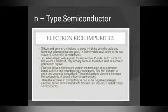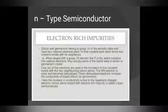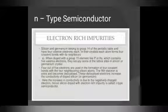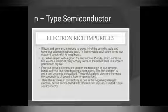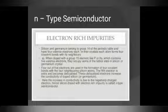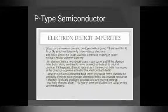Silicon and germanium belong to group 14 of the periodic table and have four valence electrons. Each atom forms four covalent bonds with its neighbours. When doped with group 15 elements like phosphorus, which contain five valence electrons, they occupy some lattice sites. Four of the five electrons are used to form covalent bonds, and the fifth extra electron becomes delocalized, increasing conductivity. This increase in conductivity is due to the negatively charged extra electron — that is why it is called electron-rich impurity and n-type semiconductor, where n stands for negative.